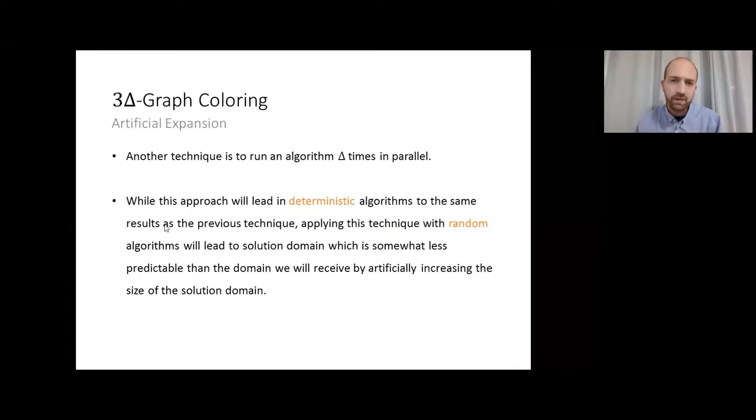As an example of this concept, consider the classic delta plus one coloring algorithm devised by Luby in 1993. This algorithm achieves coloring in O of log n rounds. If we will execute this algorithm, let's say, delta times, it will still take only O of log n rounds, since in local model both the computation and the congestion of communication links are unbounded. So now, if we will combine each color with the unique ID identifying the exact execution, we will get a set of delta valid labels, since either the ID is different, or the color is different, since it came from a valid coloring and from the same execution. Given all that, we get a valid solution domain of size delta.